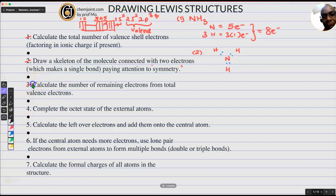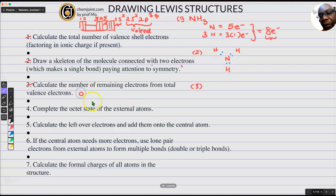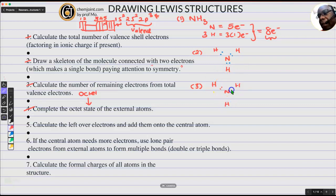And now I'm going to connect them with two electrons because we know that two electrons make a bond. Then we are on number 3: calculate the number of remaining electrons from the total valence. We have to use 8 but I've only used 6. And usually you want to pay attention to the octet rule, which is the next one to know where the remainder electrons will go. So those are the 6 electrons used.